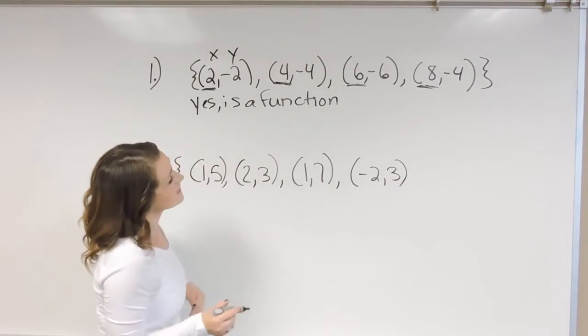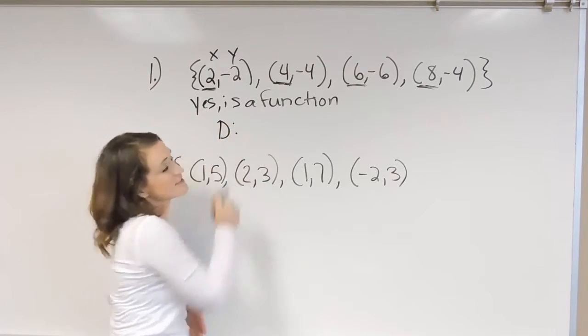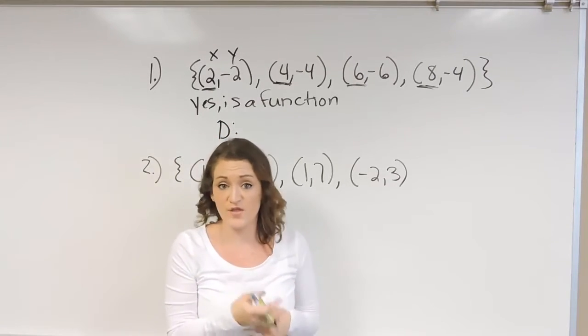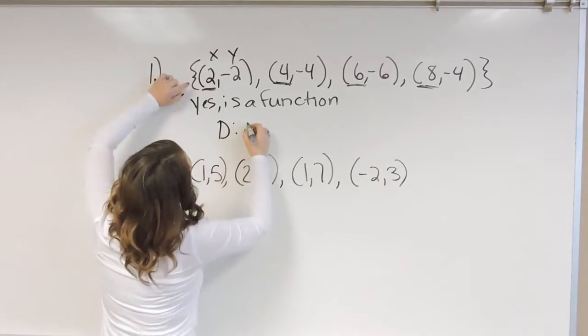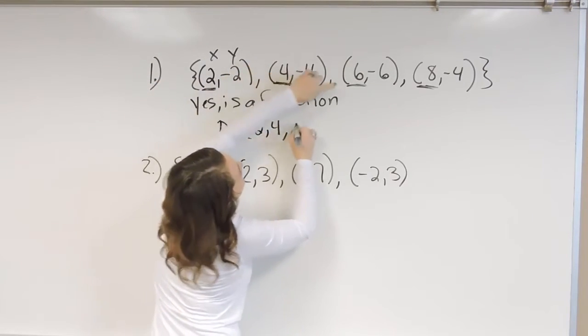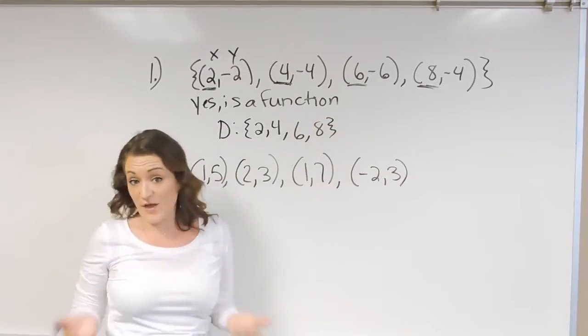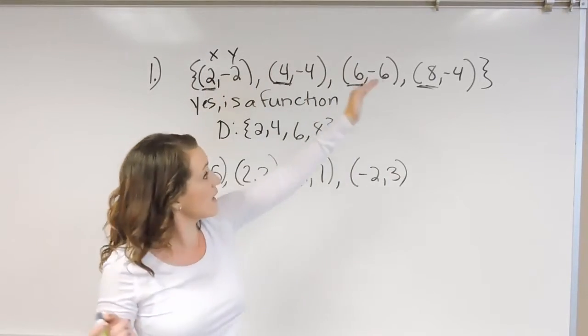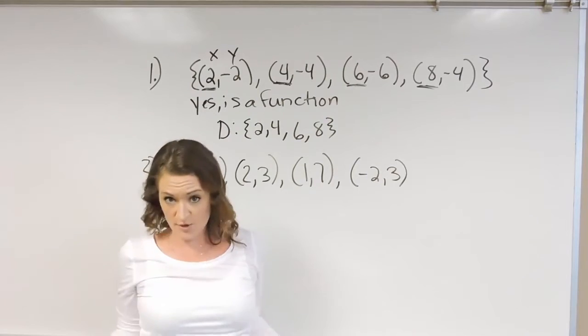Now, with ordered pairs here, stating the domain is just a matter of listing everything in the X position. So our domain is made up of a 2, a 4, a 6, and an 8. And that's it. Those four points right there, those four values is our domain.